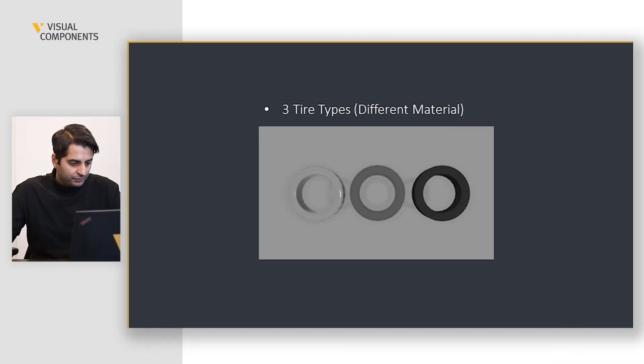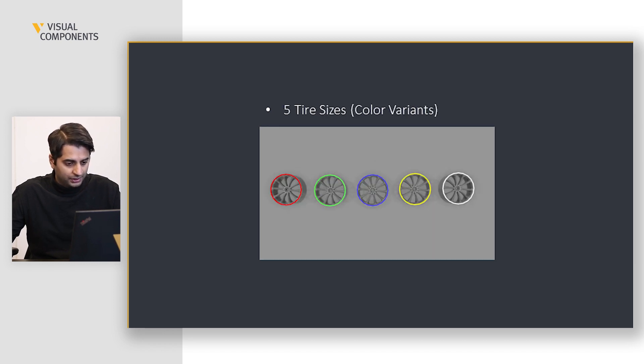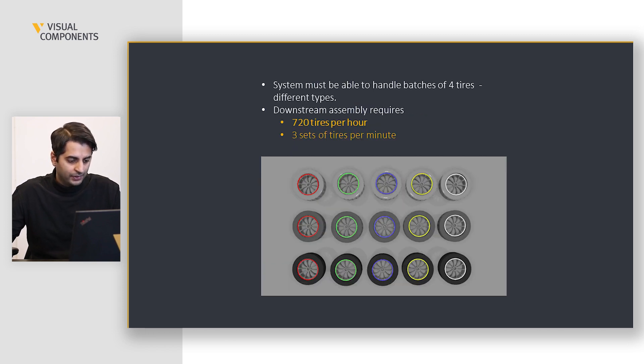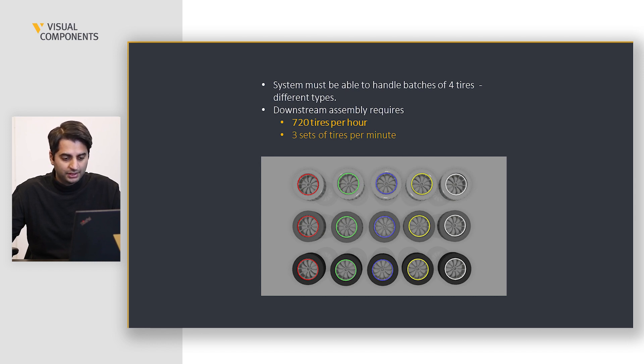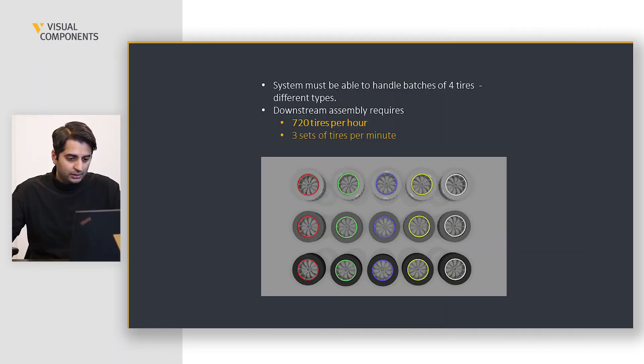Let's look at the production goals first. The product we have is tires. We have three materials of tires and five different sizes represented in different rims or color variants, giving us 15 products in total. The customer needs a setup capable of handling all these tires in batches of four. The downstream assembly requires the tire plant to supply 720 tires per hour, and the supply to downstream should always be smooth. Working in batches of four, 720 tires per hour means the goal is to supply three tires per minute.